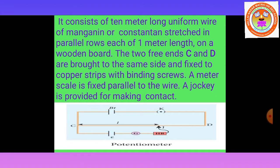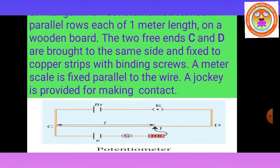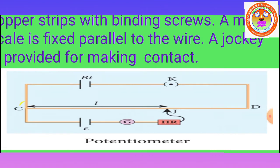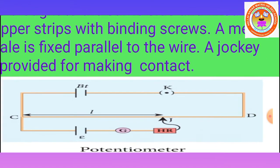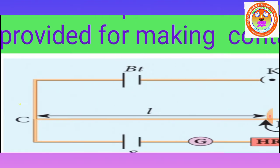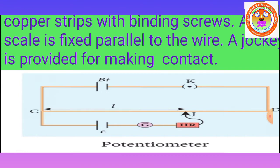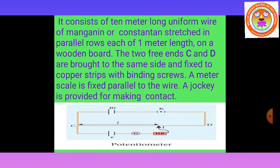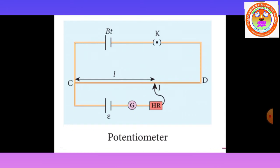A meter scale is fixed parallel to the wire, and a jockey is provided for making contact. In this circuit diagram, here this is end C and D. This is the manganine wire; the length of the manganine wire is noted by the letter L. The jockey is provided for making contact with the manganine wire. This is a circuit diagram for the potentiometer.